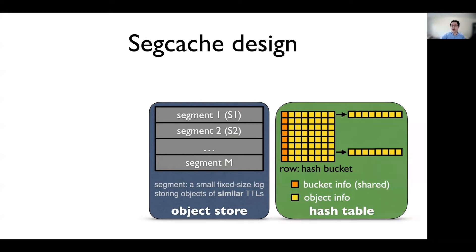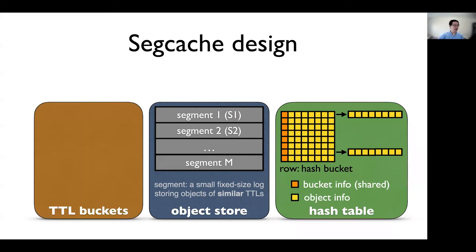Like any other cache, it also has a hash table. But the difference is that Segcache uses a bucket-chaining hash table, unlike memcached, which uses an object-chaining hash table. Each row here is one bucket, and on average we hash seven objects to each row. The third component is new, is TTL buckets.